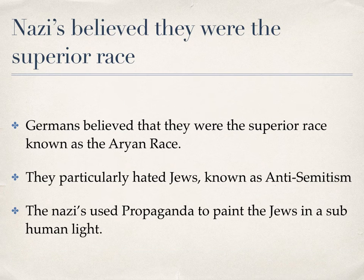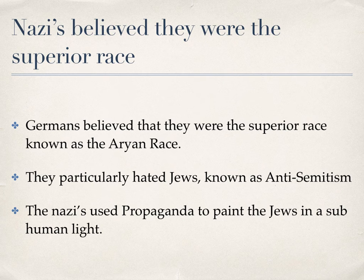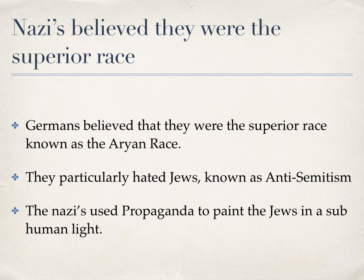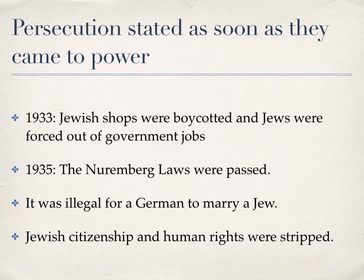The first thing to establish is that the Nazis believed they were the superior race — they believed in something called the Aryan race and they particularly hated Jews. The hatred of Jews is known as anti-semitism. This word can come up in short answer questions and in section D, and if you're writing an account on the Holocaust or persecution of the Jews, anti-semitism is a key term you need.